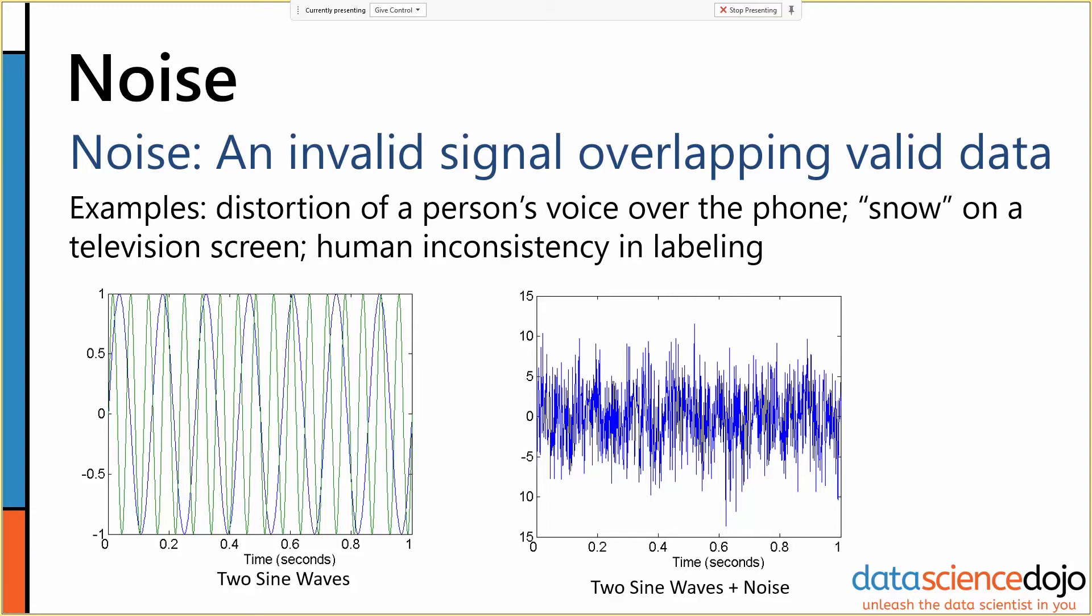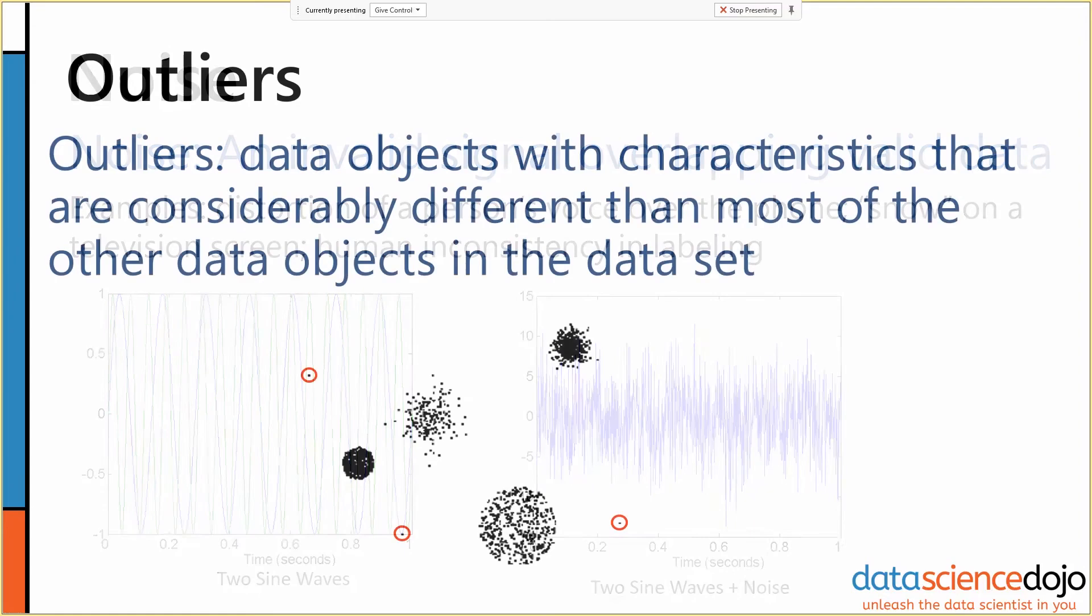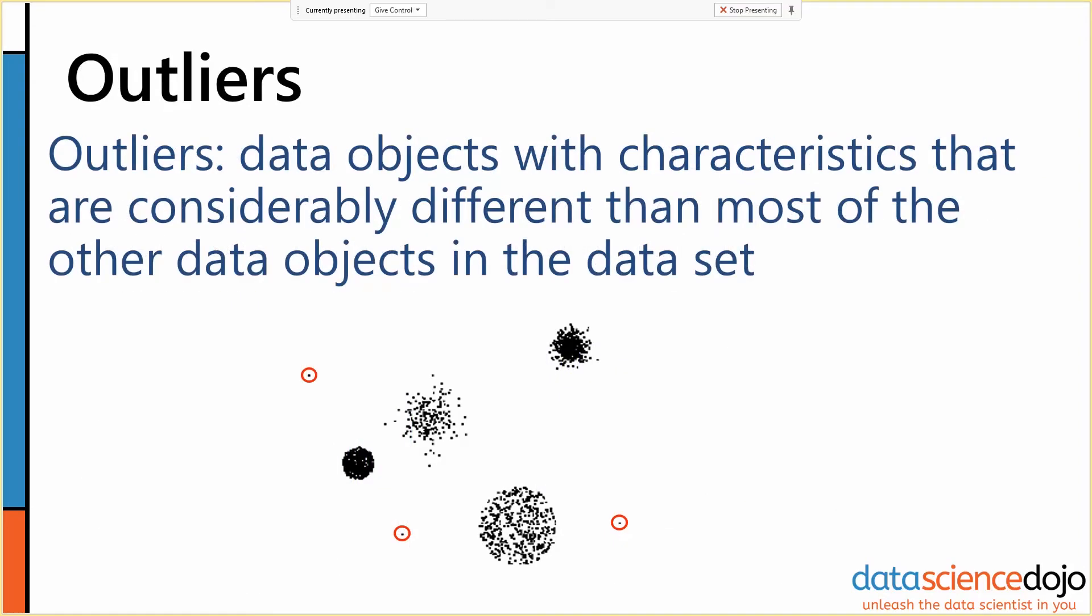Sort of the complementary problem to noise is the problem of outliers. So outliers often look like noise at first, they're data objects that have characteristics that are considerably different from most of the other objects in the data set.